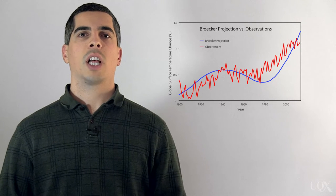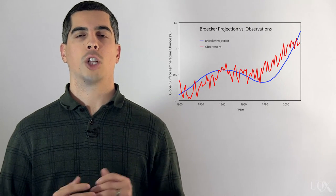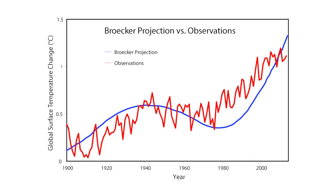In 1975, American climate scientist Wallace Broecker coined the term global warming. He used a global climate model to estimate that due to rising carbon dioxide levels, between 1975 and 2015, the Earth's surface temperature would warm by about 1 degree Celsius.